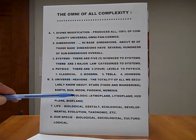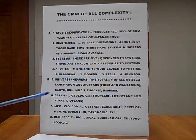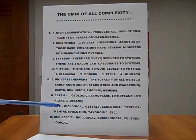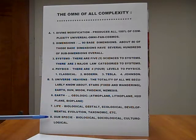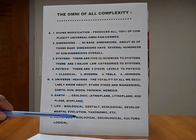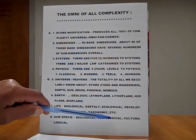Number six, earth. From its geological standpoint, atmoplane, lithoplane, H2Oplane, bioplane. Number seven, life itself as we know it. Biological, gestalt, ecological, developmental evolution, taxonomic, etc. And number eight, our species, which has three universal categories. Biological, sociological, cultural.